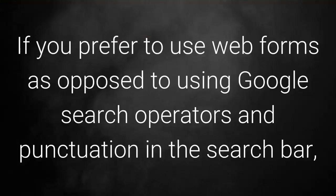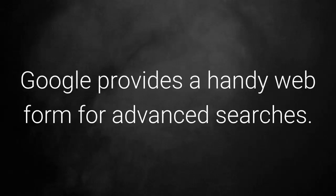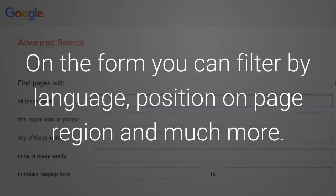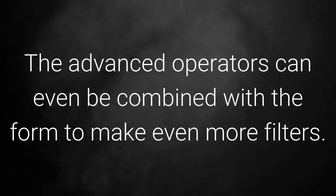If you prefer to use web forms as opposed to using Google search operators and punctuation in the search bar, Google provides a handy web form for advanced searches. On the form you can filter by language, position on page, region, and much more. The advanced operators can even be combined with the form to create even more refined filters.